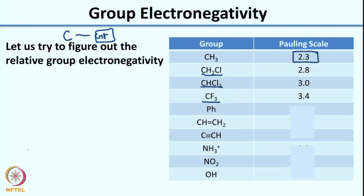Let us check the answers. As you go down the table for CH2Cl, CHCl2, and CF3, the electronegativity is increasing. The hint here is that as you go down, the number of halogen atoms is increasing — one Cl, then two Cls, then three fluorines. This increasing number of electronegative halogens raises the overall group electronegativity.